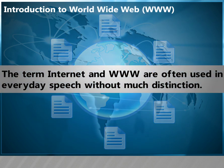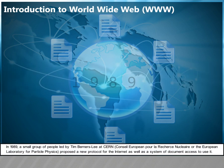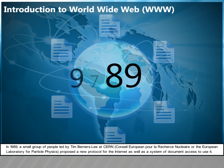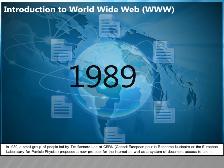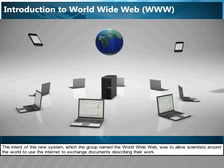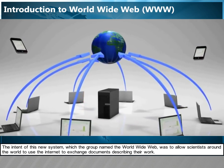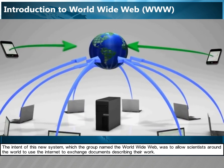The term Internet and www are often used in everyday speech without much distinction. In 1989, a small group of people led by Tim Berners-Lee at CERN — the European Laboratory for Particle Physics — proposed a new protocol for the Internet as well as a system of document access to use it. The intent of this new system, which the group named the World Wide Web, was to allow scientists around the world to use the Internet to exchange documents describing their work.